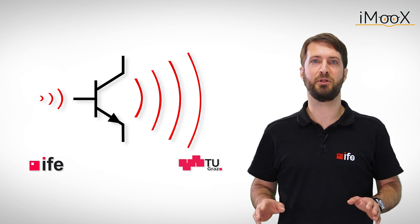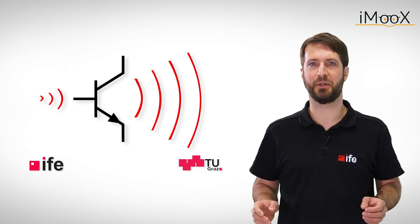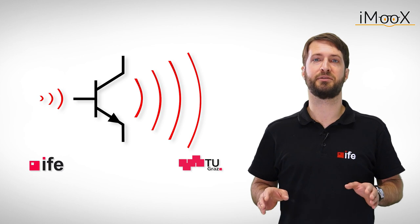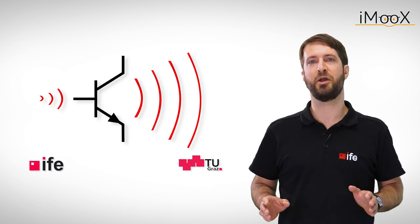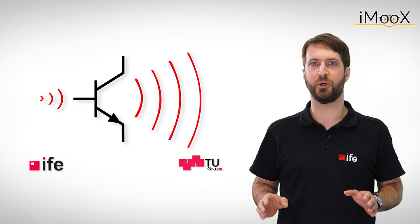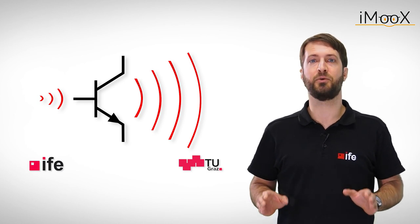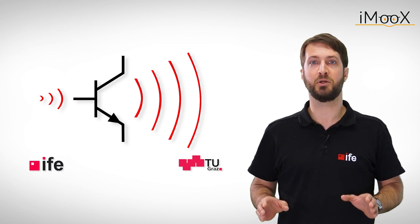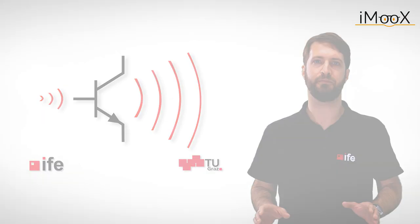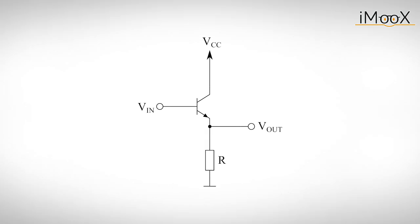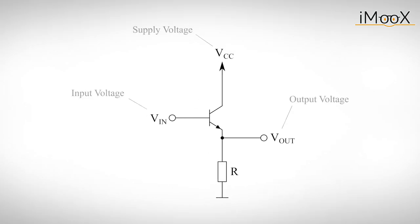Now that we know the basic principle of a transistor it's time to experiment. It is important to understand that the transistor amplifies current only. This way of thinking might feel a little unusual at first. To get a better understanding of what's going on we consider a rather simple circuit called the emitter follower. The transistor is supplied by two voltage sources. One at the base, which we further refer to as input voltage, and one at the collector, which we call supply voltage. The output voltage of the transistor circuit is located at the emitter.